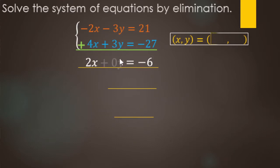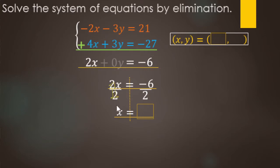We have zero y's, so the y's just go away. We are left with 2x equals negative 6. We just need to undo the multiply by 2, so we divide both sides by 2. 2 divided by 2 is 1x. Negative 6 divided by 2 — negative divided by positive is negative — gives us negative 3. So the x value for the ordered pair is negative 3.